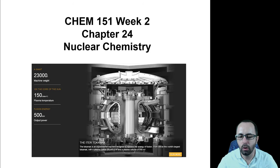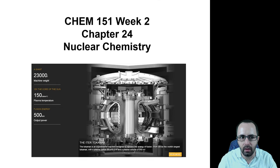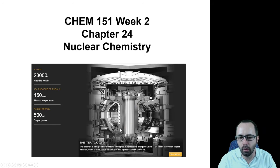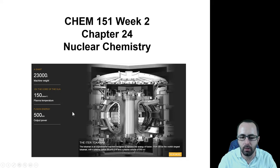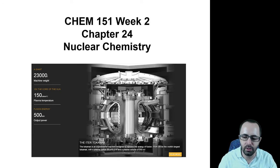Nuclear fusion reactors make lots of energy and have no risk of running out of control. In fact, the hard part of a nuclear fusion reactor is to maintain very, very high temperatures — like the core of the sun. The ITER tokamak is going to reach 150 million degrees Celsius, 10 times the temperature of the core of the sun. If we can accomplish this, it will mean energy independence for mankind. The only fuel needed is hydrogen, which is what the sun is mostly made of.